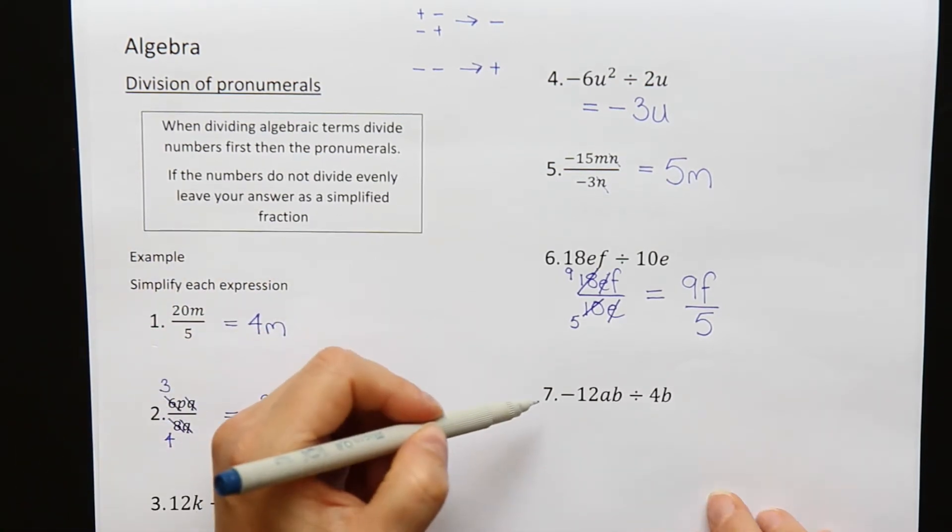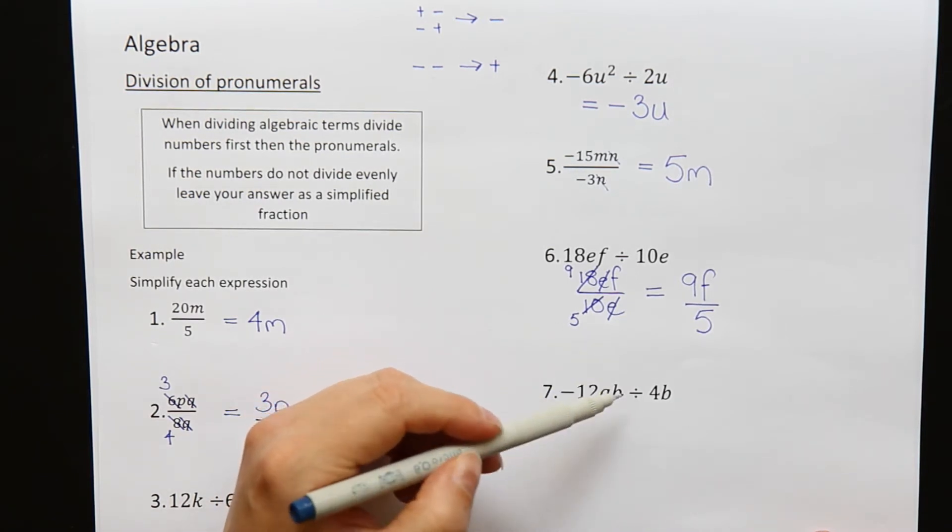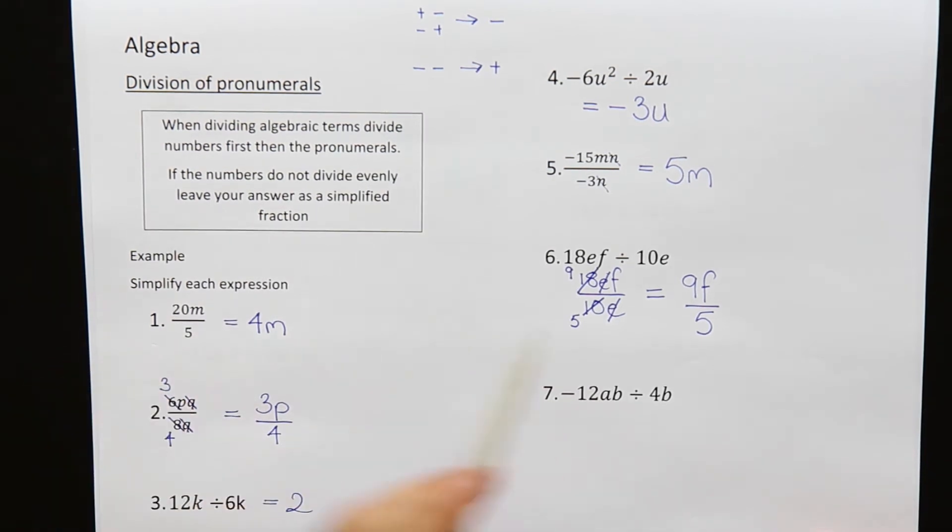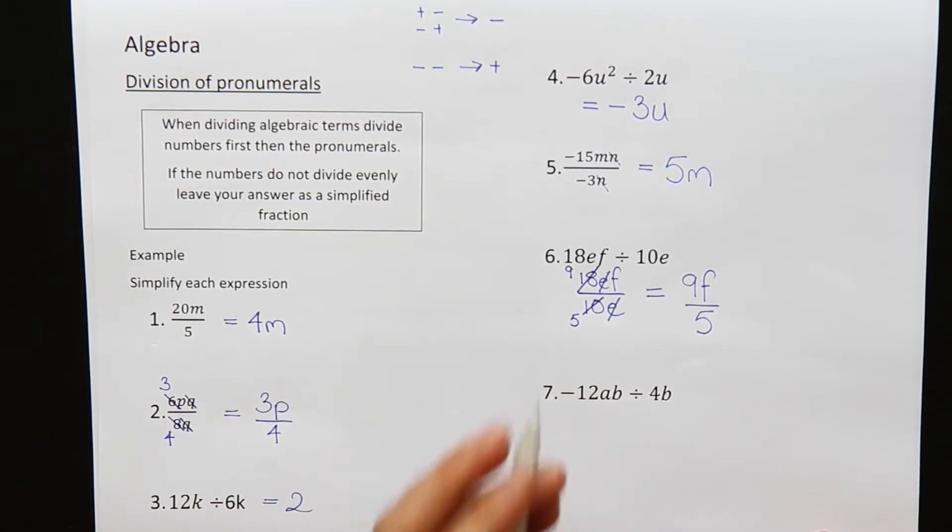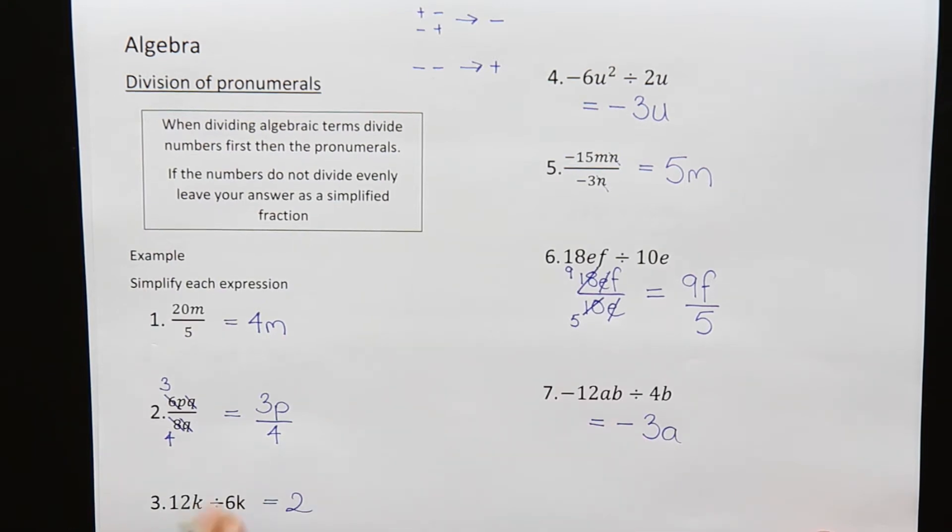One more question here. Question seven. Minus 12ab divided by 4b. Well, those numbers I can divide. Minus 12 divide by 4. Minus and a positive. I will get a negative answer. 12 divide by 4 is 3. And the B that's with this 4 will cancel this B off. So all that will be left is the A. Minus 3a.